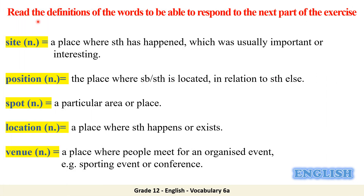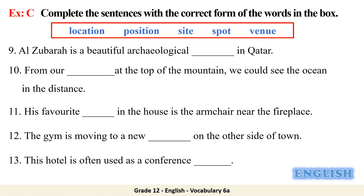Moving on to a new set of easily confused words — we have: site, position, spot, location, and venue. Pause the video and read the definitions. 'Al-Zubara is a beautiful archaeological ___ in Qatar' — it is an interesting site.